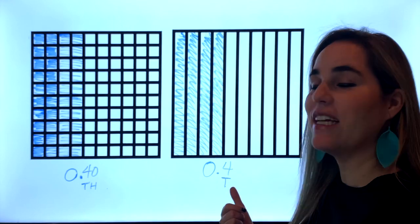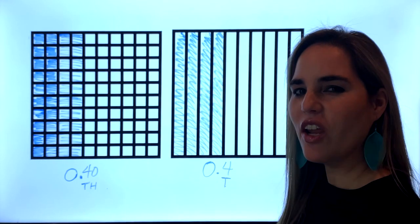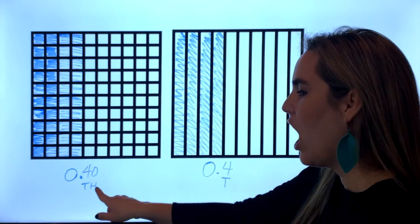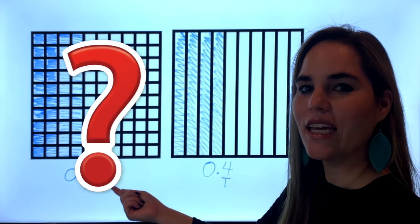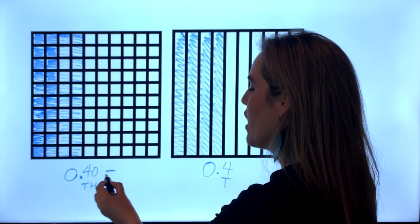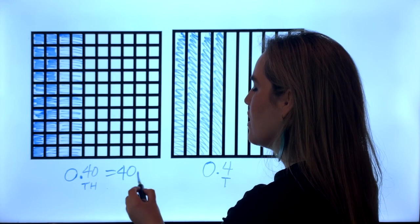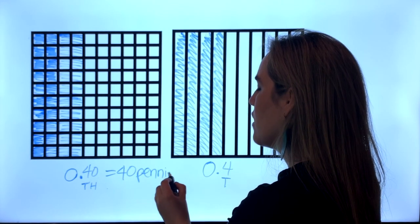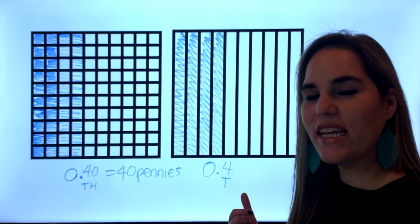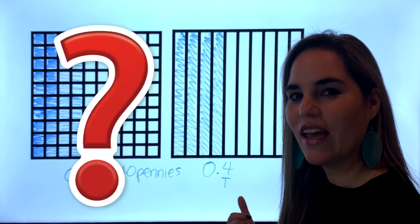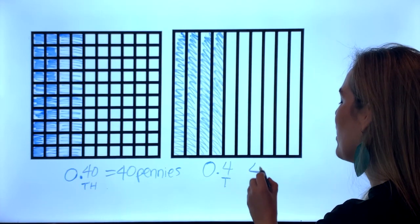Forty hundredths is equivalent to four tenths. So now a little bit extra challenge, how many pennies would this be? Forty pennies. And how many dimes would this be? Four dimes.